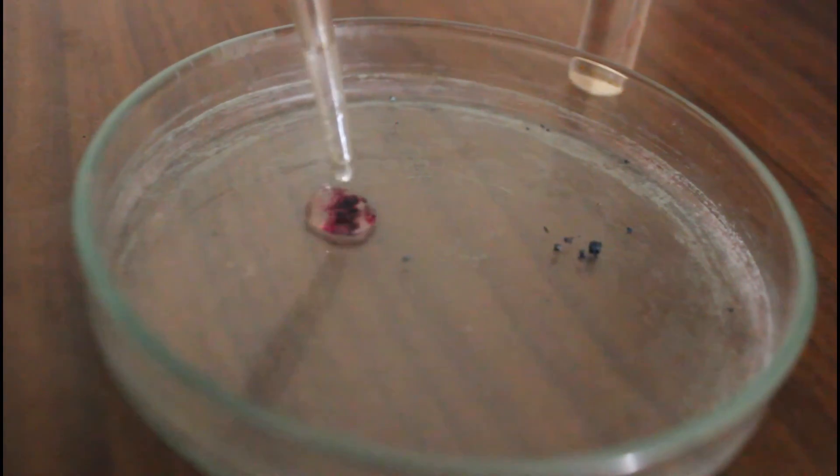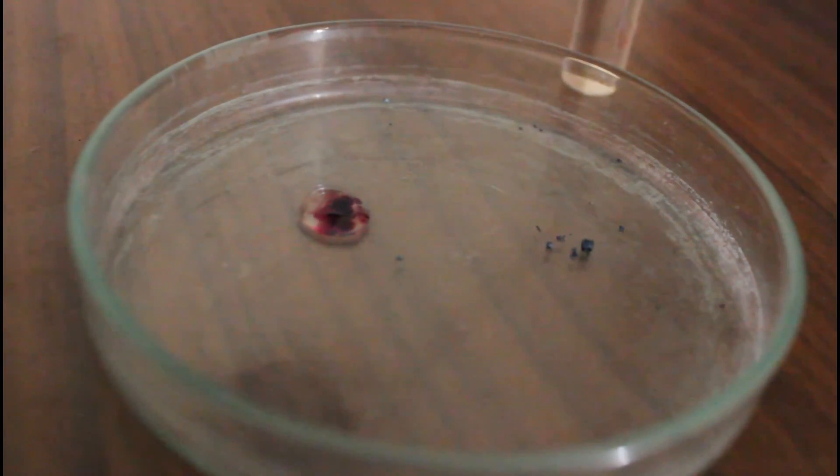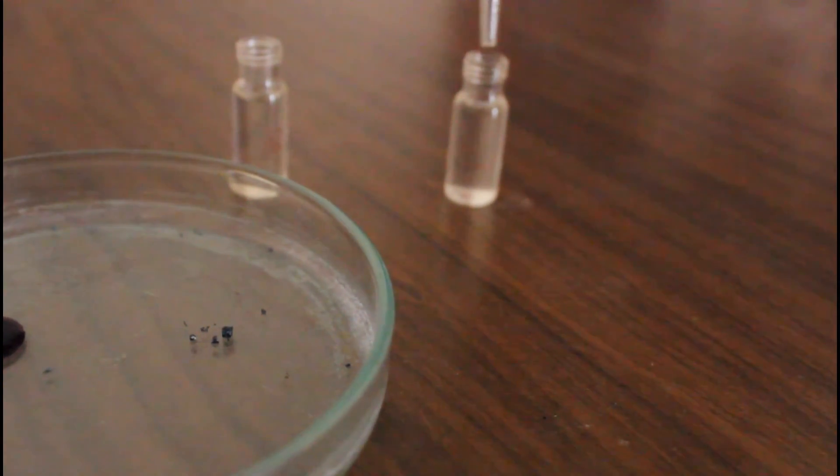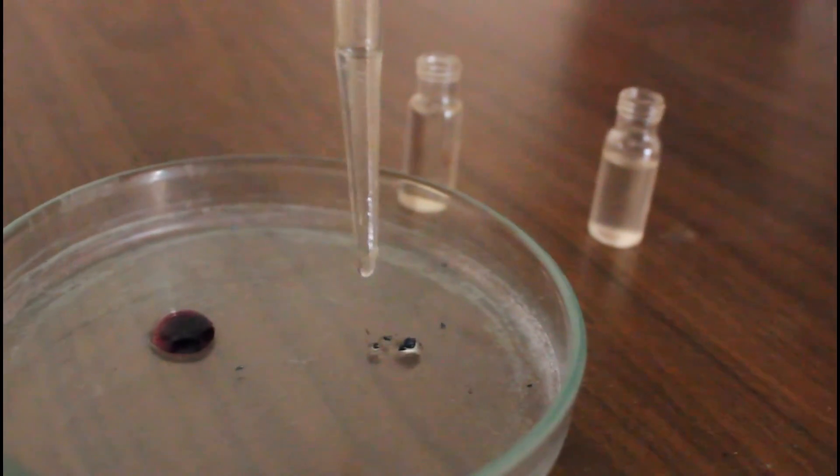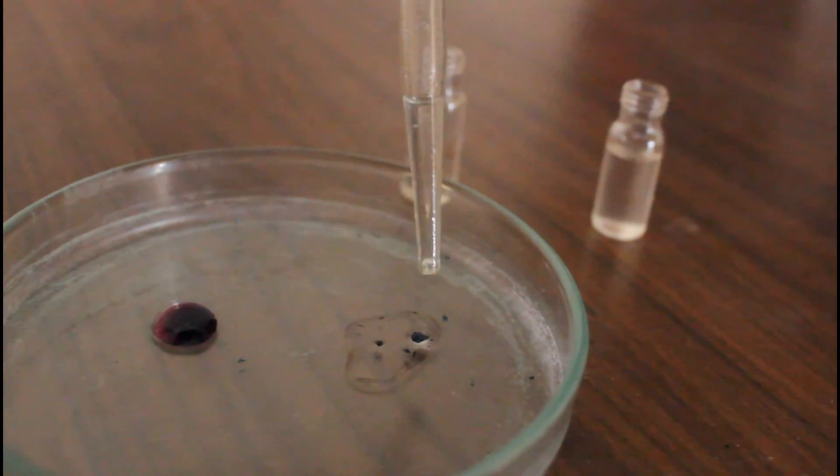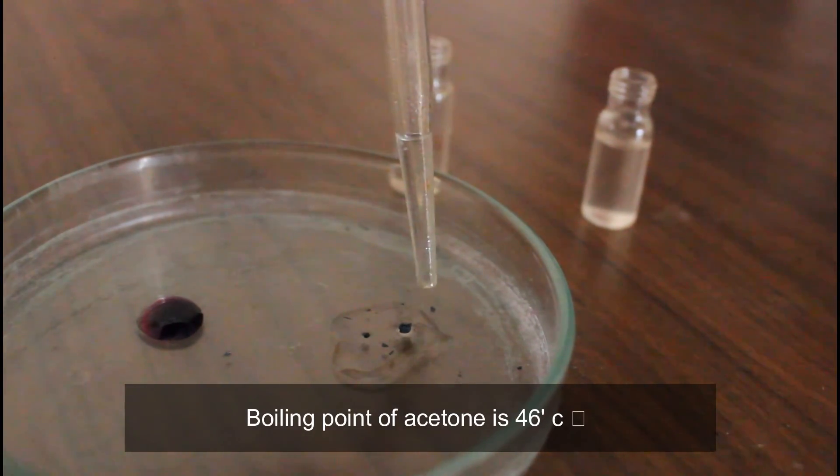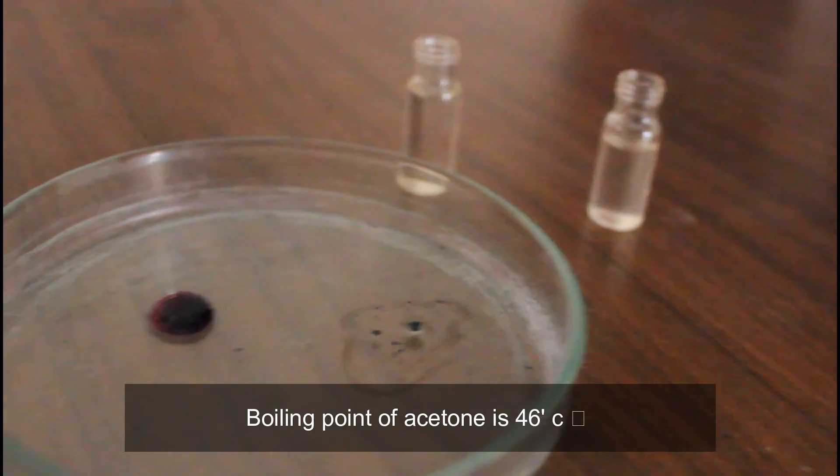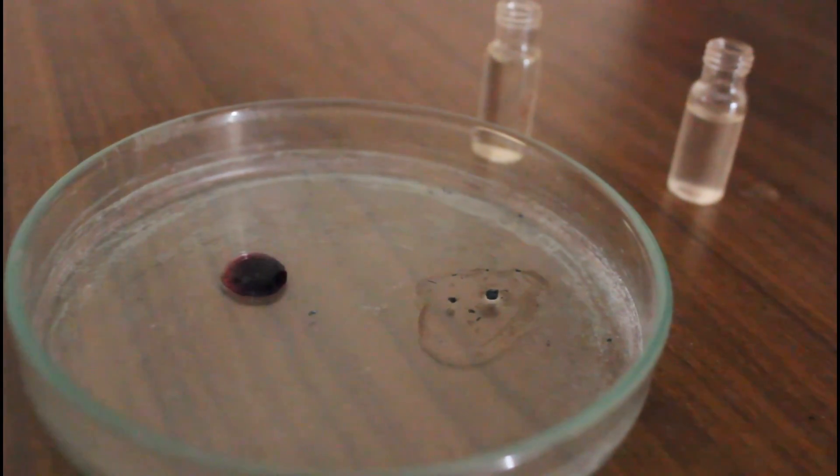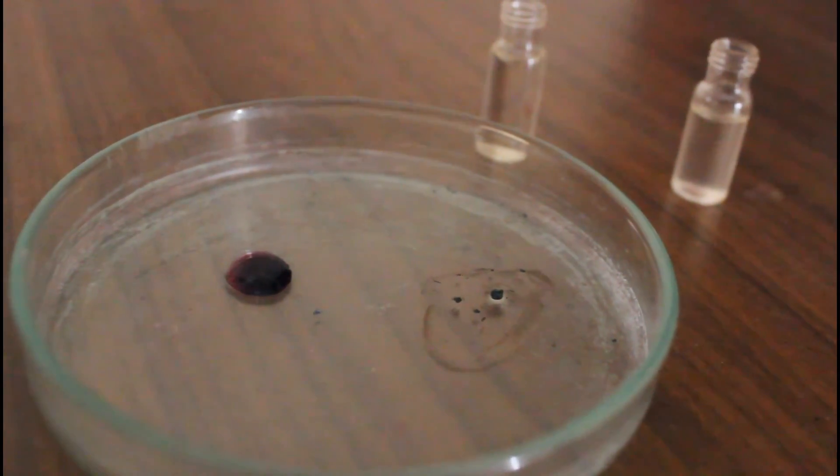As you can see here the sample L dissolves the potassium permanganate while the sample U is oily, hence it doesn't give any solubility. L is acetone while U is still mysterious.